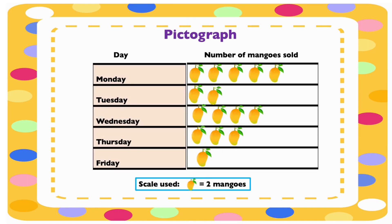This is a pictograph. A pictograph uses pictures to represent data in a simple way. Look at this pictograph — it's showing the number of mangoes sold in a week. These are the days of the week, and these are the number of mangoes sold. At the bottom is the scale used: one picture represents two mangoes.